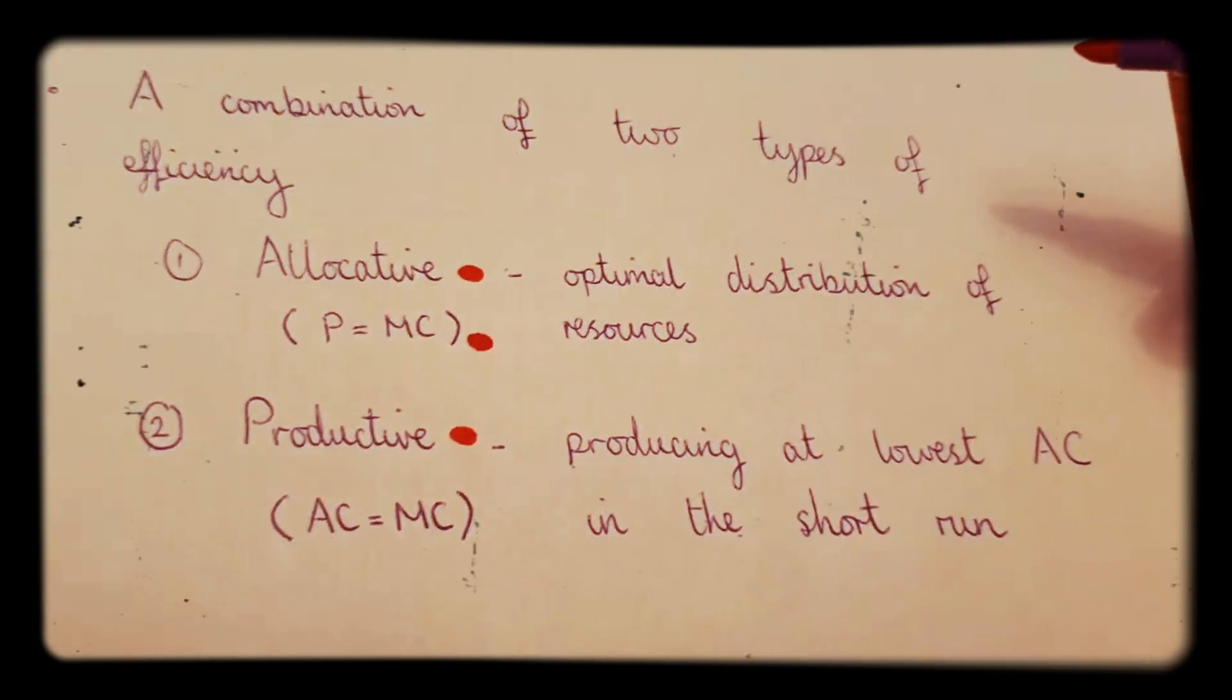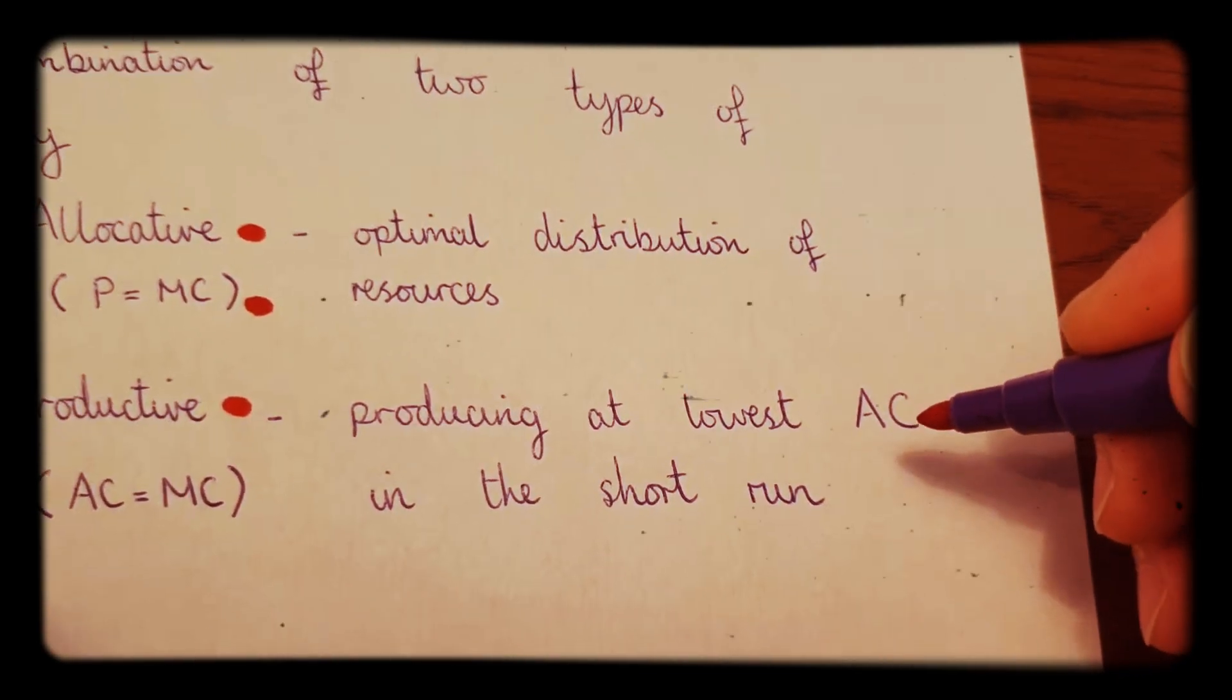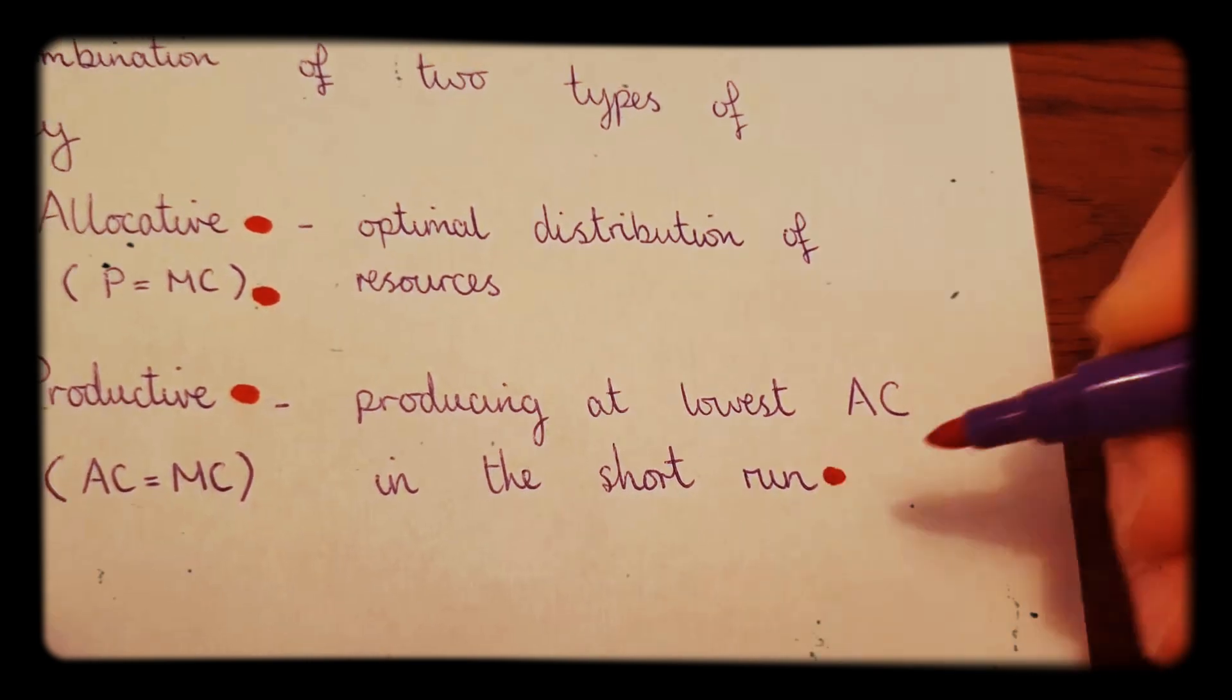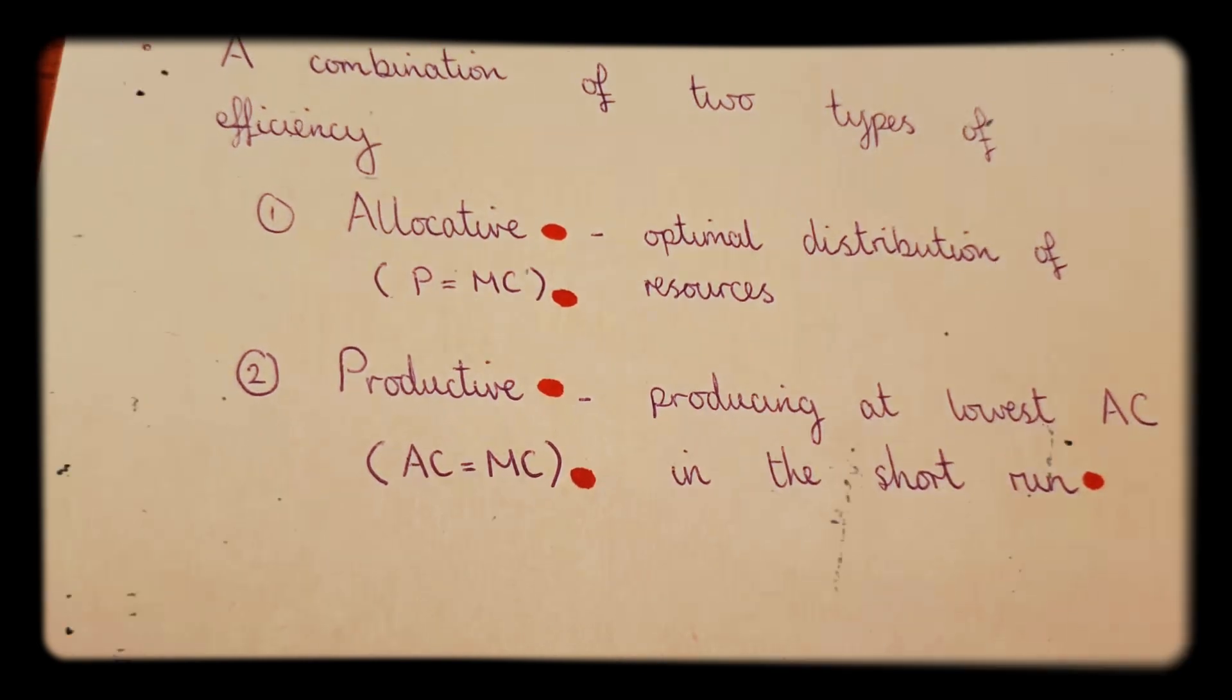Productive efficiency means producing at the lowest possible average cost in the short run, and this is achieved at the point AC equals MC.